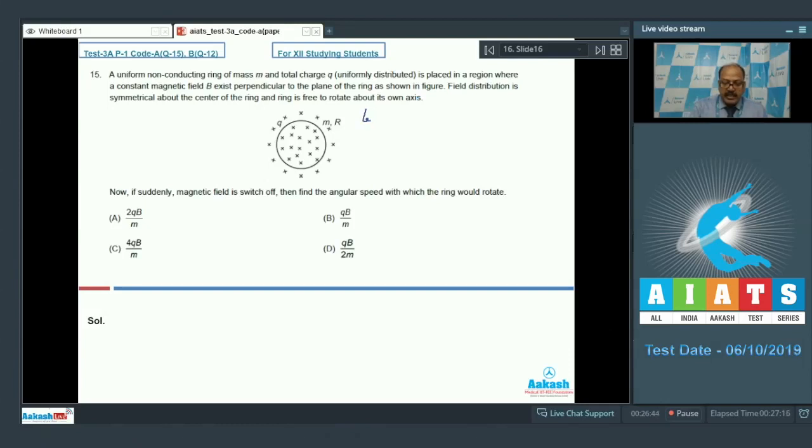To find the expression for electric field, we can write E into 2 pi R, where E is the induced electric field, E into 2 pi R equals pi R square dB by dT. dB by dT here is B upon delta T, because the magnetic field has become 0 from initial value B. This gives us E is equal to Rb by 2 delta T. Now, the angular impulse J is torque multiplied by the time for which it has acted. The torque is electric field multiplied by Q into R and this into delta T is the angular impulse.